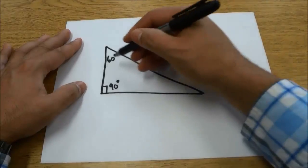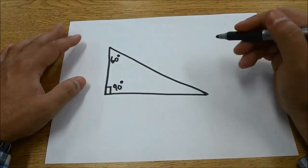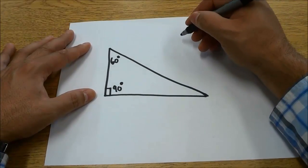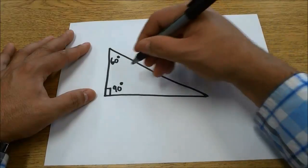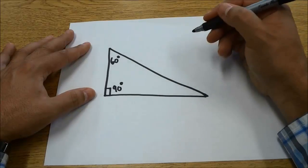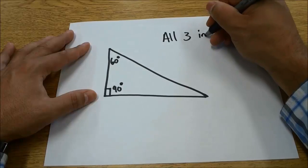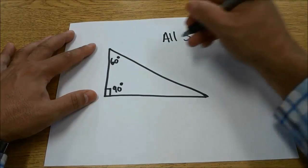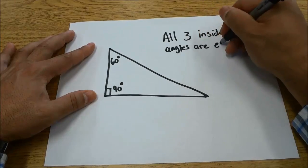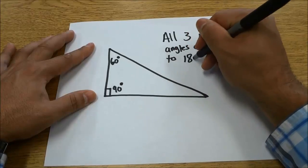Now the key to finding the missing angle is knowing the simple fact that all three interior angles of a triangle are equal to 180 degrees.